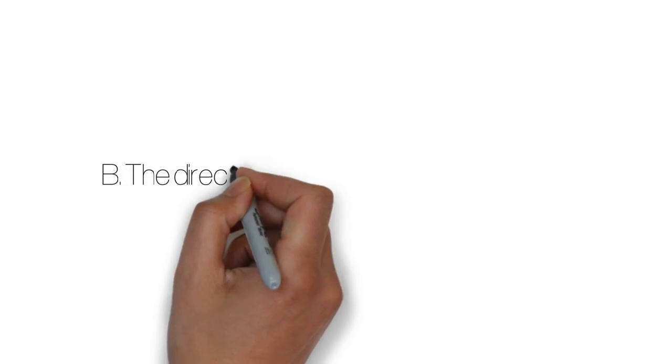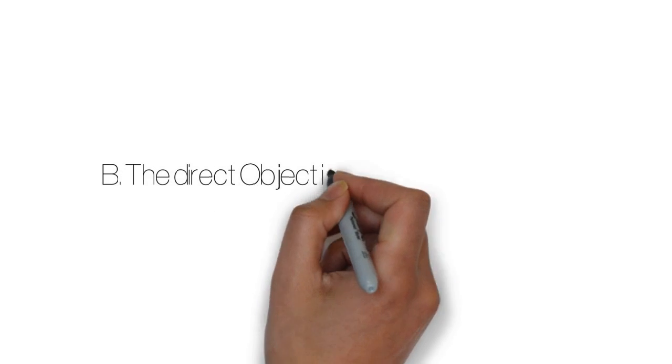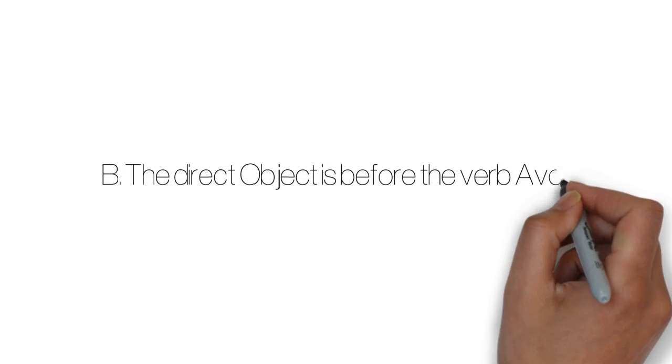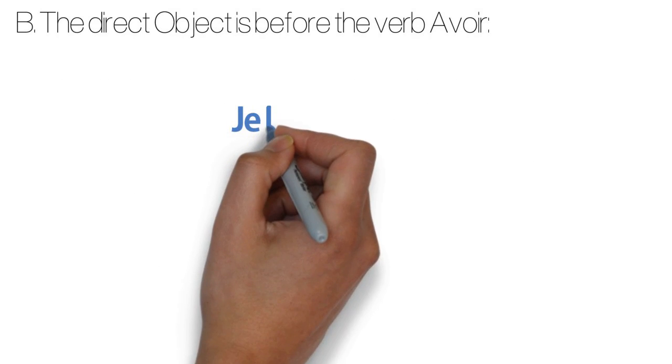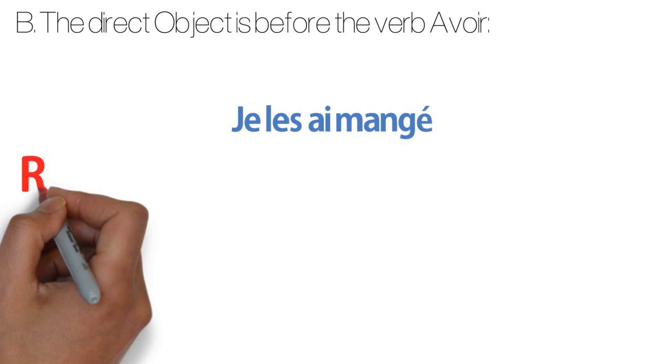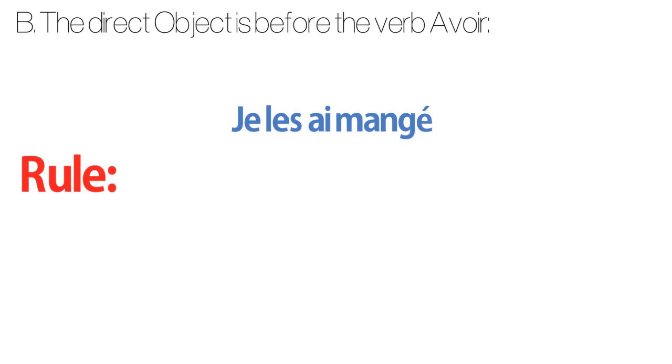Now, when the direct object is before the auxiliary verb avoir. And you understand that the rule will be different. So, je les ai mangé. Let's see if this sentence is right or wrong written this way.